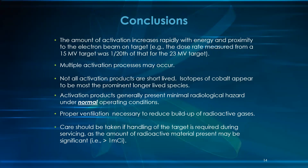In conclusion, the amount of activation increases rapidly with energy and proximity to the electron beam target. The dose rate measured from a 15 MV target was one-twentieth of that from a 23 MV target. Multiple activation processes may occur. Not all activation products are short-lived — isotopes of cobalt appear to be the most prominent longer-lived species. Activation products generally present minimal radiological hazard under normal operating conditions. Proper ventilation is necessary to reduce buildup of radioactive gas.